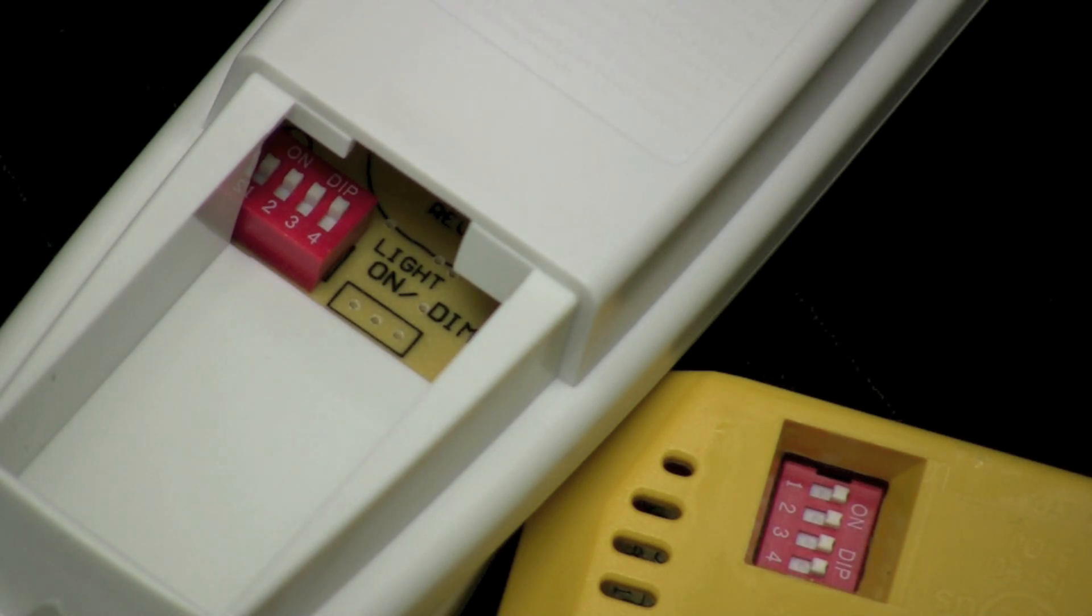Now to get these to match, you could simply adjust the dip switches in the remote control until you get the match with the receiver. Or you could simply open the fan, go to the receiver and see what those dip switches are set at, and then set the remote dip switches to match the ones in the receiver.